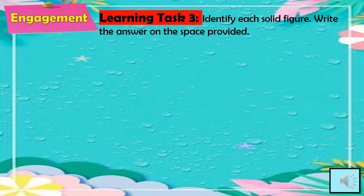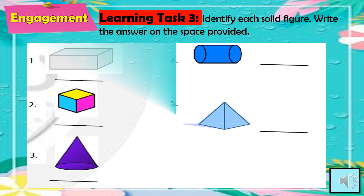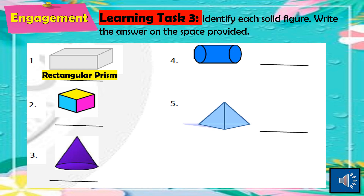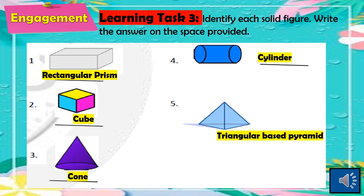For learning task 3, identify each solid figure and write the answer on the space provided. The answers are: number 1 — rectangular prism; number 2 — cube; number 3 — cone; number 4 — cylinder; and number 5 — triangular-based pyramid.